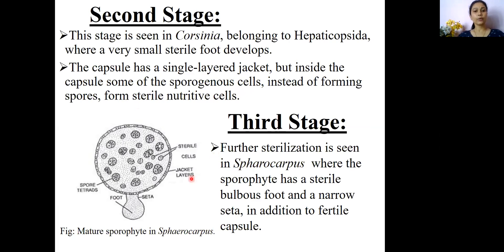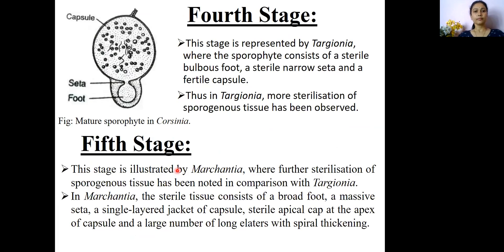In the third stage, represented by the genus Sphaerocarpos, foot and seta are present in addition to other sterile tissues like secondary layers and sterile cells. The fourth stage is represented by the genus Targionia, where foot, seta, and a sterile fertile capsule are present.